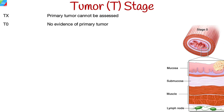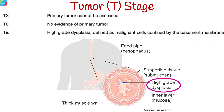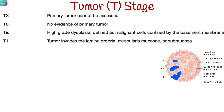Tx means that the primary tumor cannot be assessed. T0 means there is no evidence of primary tumor. Carcinoma in situ, written as TIS, means that there is high-grade dysplasia, indicating abnormal cells present only in the innermost layer of the esophageal lining. T1 means that the cancer has invaded the lamina propria or submucosa, the first two layers of the esophageal wall.